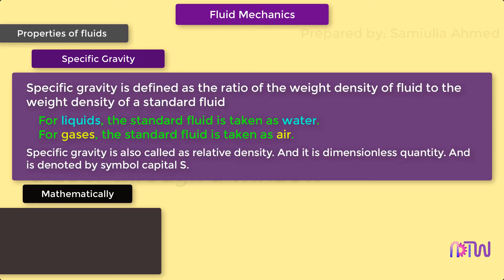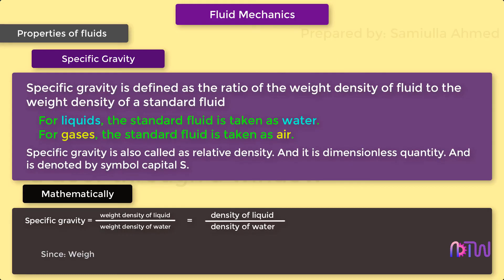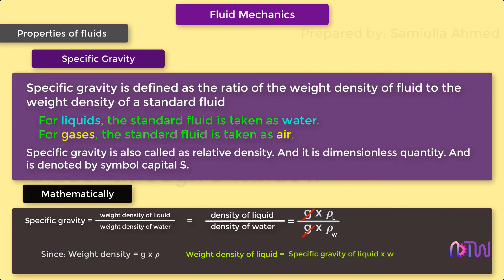Mathematically, specific gravity is equal to weight density of liquid divided by weight density of water. We can also use density of liquid divided by density of water, since weight density is nothing but g into rho — the g's cancel out. Therefore, weight density of any liquid is equal to specific gravity of that liquid into weight density of water, or density of any liquid is equal to specific gravity of that liquid into density of water.